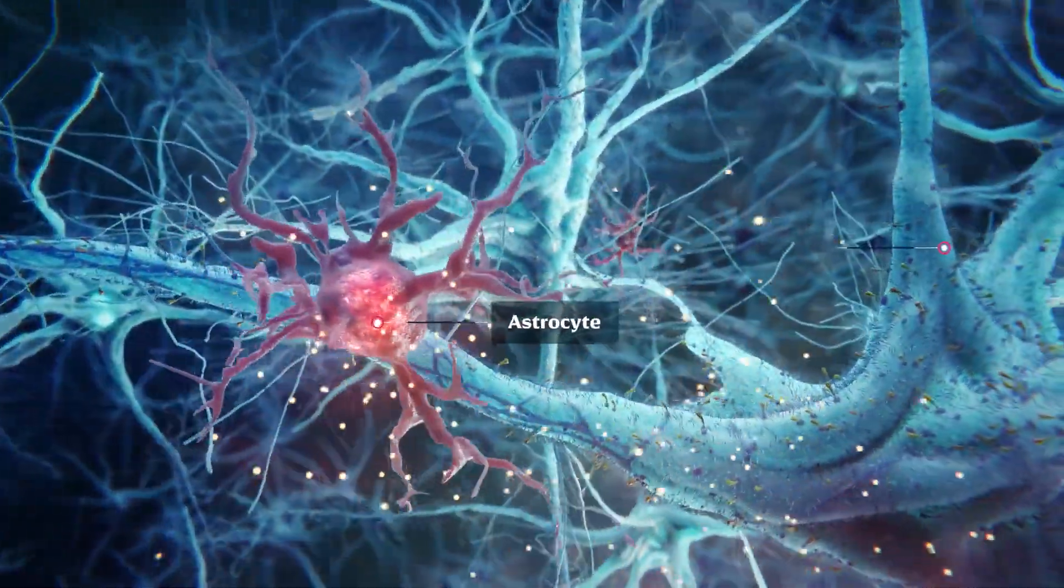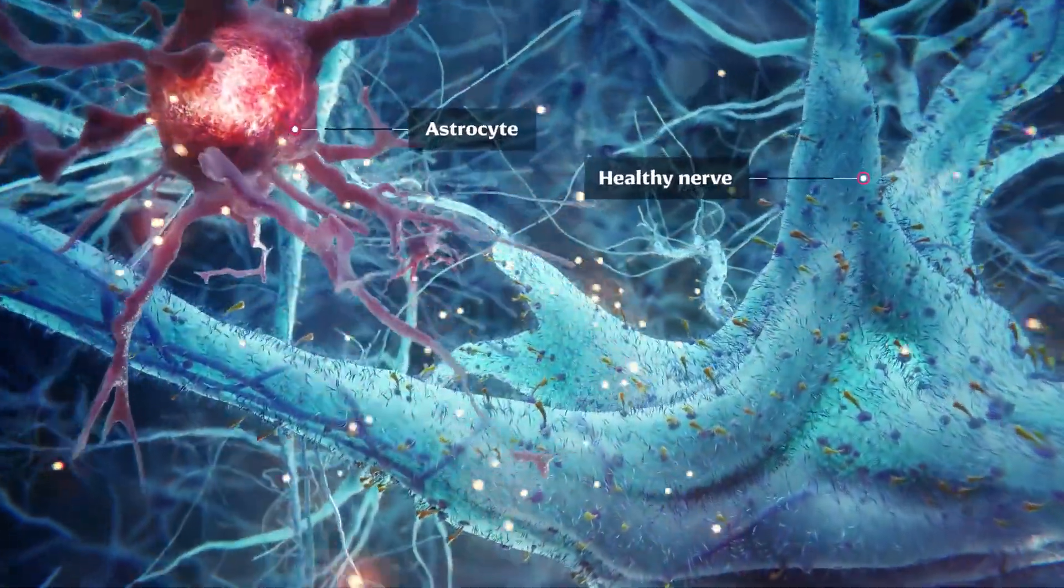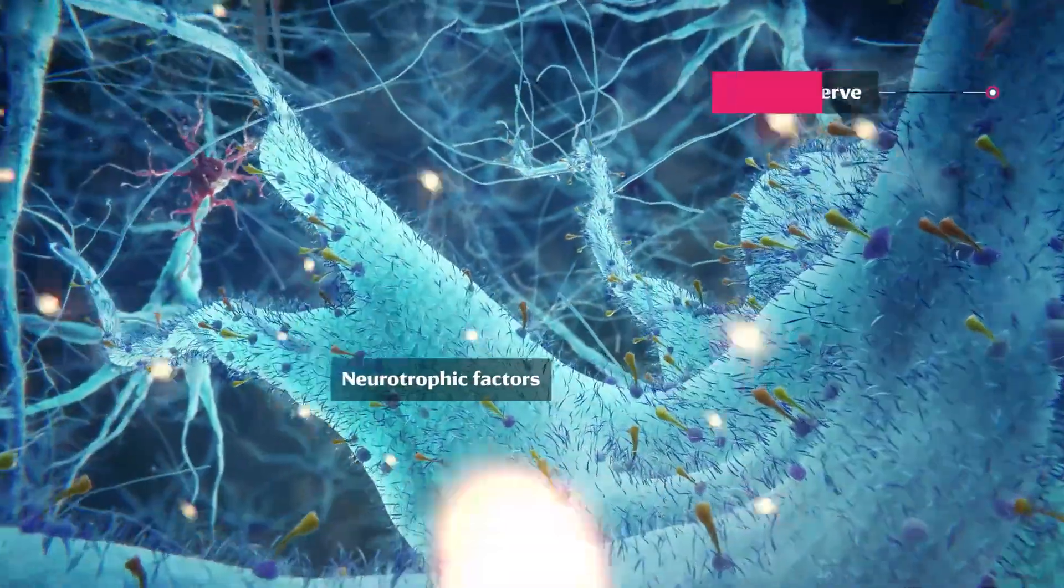Astrocytes, an important cell type within the brain, provide energy, nutrients, and survival factors to nerve cells.